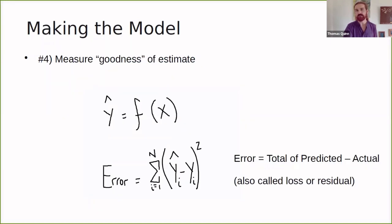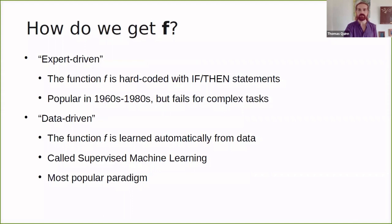We then can measure the goodness of this estimate. Y hat is a function of X, and we can compare that Y hat to the true known value of Y by taking the difference between the two, Y hat minus Y, for each sample, squaring it so that the negatives become positive, and then adding up those differences. This, in the machine learning lingo, is called an error. If you're familiar with statistics, you might recognize this more as a residual. It's also often called the loss.